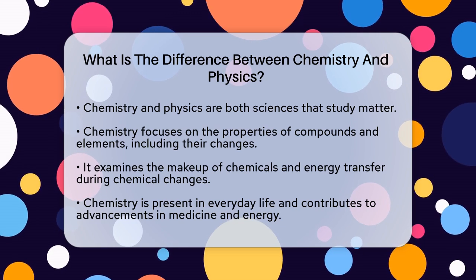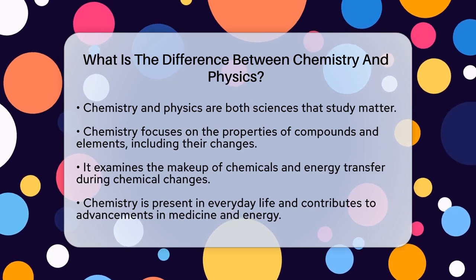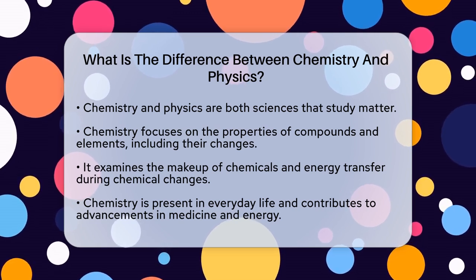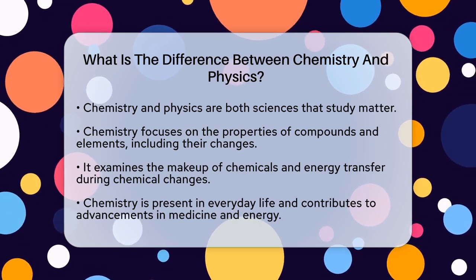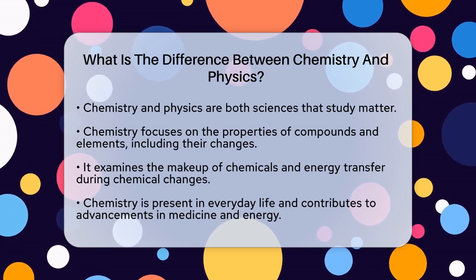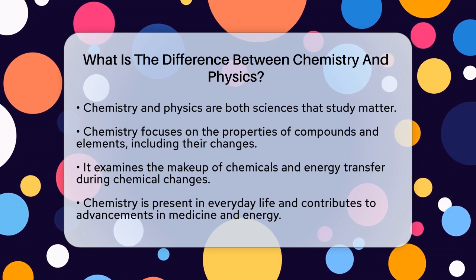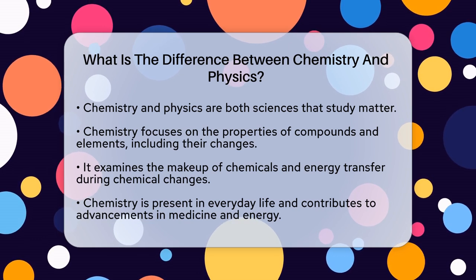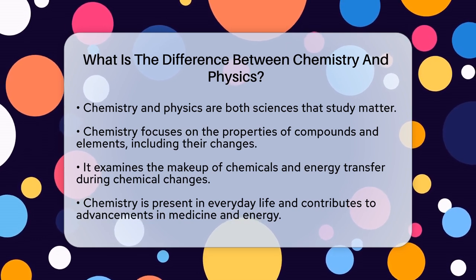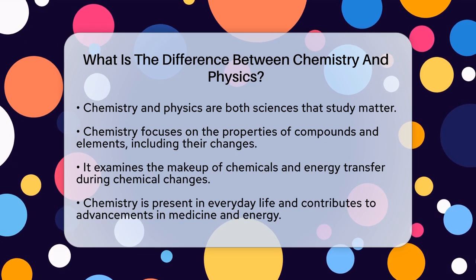Chemistry and physics are both sciences that study matter, but they approach it from different angles. Chemistry is all about the properties of compounds and elements, how they change, and the concepts that explain these changes. It involves studying the makeup of chemicals, how they transform from one state to another, and how energy is transferred during these chemical changes.